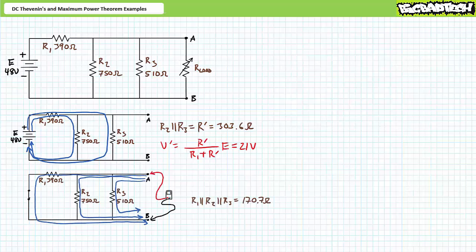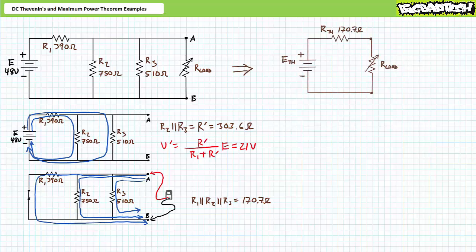Let's move on to solving for RTH, the Thevenin's equivalent resistance. Solving for RTH necessitates removal of the load resistor and the sources — voltage source replaced with a short, current source replaced with an open. One determines the resistance at the terminals of interest. RTH is not the resistance seen by the original source; it is the resistance seen by the load resistor when the source has been removed. An ohmmeter placed at the terminals of interest will see R1, R2, and R3 in parallel with one another. R1, R2, and R3 in parallel present a resistance of 170.7 ohms — this is our Thevenin's equivalent resistance, RTH. Our Thevenin's equivalent circuit is the series combination of ETH at 21 volts and RTH at 170.7 ohms.